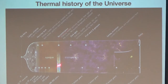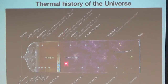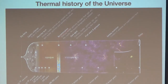Then gravity comes in and amplifies the fluctuations — which turn out to be tiny at that epoch — into the highly nonlinear structures we see today. What we do in cosmology is combine all the information from recombination until now to understand how this structure forms.